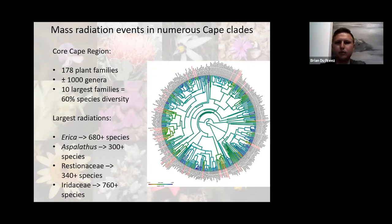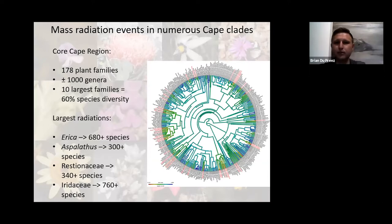Also quite surprising is the diversity of restios, as well as irids and daisies. The mesems (Aizoaceae) and the daisies (Asteraceae) each make up roughly 10% of the total species diversity in the Cape Flora.